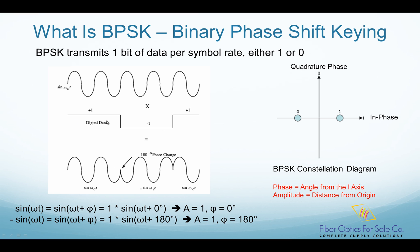This is a digital data stream: positive 1 volt represents binary bit 1 and negative 1 volt represents binary bit 0. This is a carrier sine wave — a continuous sine wave with no phase jump at all. However, when the digital data stream and the carrier sine wave are combined, the carrier sine wave's phase is modulated based on current data. If the current data is 1, the sine wave has no phase shift, the phase is 0 degrees: sine(ωt). If the data is 0, represented by negative 1 volt, the sine wave's phase is shifted by 180 degrees, and it becomes negative sine(ωt), since it is flipped upside down compared to sine(ωt).